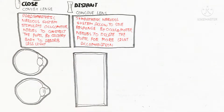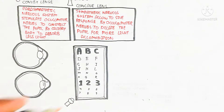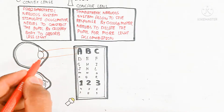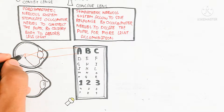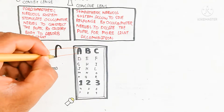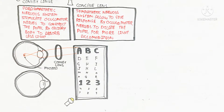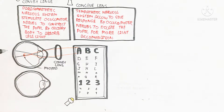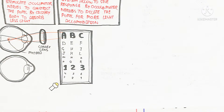Now we will discuss problems of the eye related to the lens. Myopia is the first — it is the near-sighted problem. The image forms too close to the lens and does not reach the retina. We can fix this with a concave lens in glasses, which increases the focal distance so that the image properly reaches the retina for better light accommodation.